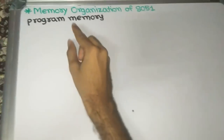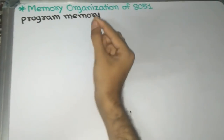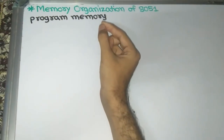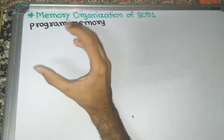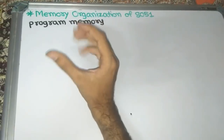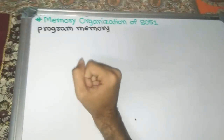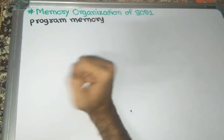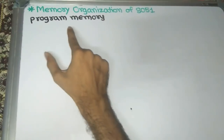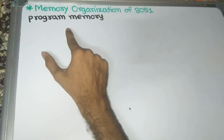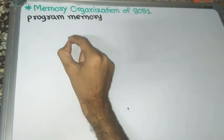If we discuss the memory organization of 8051, there are two types: one is program memory and one is data memory. So first of all, let us discuss program memory.